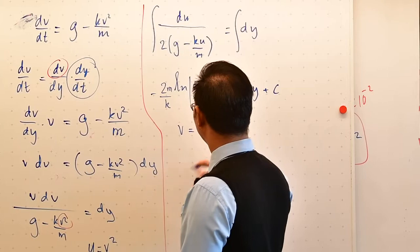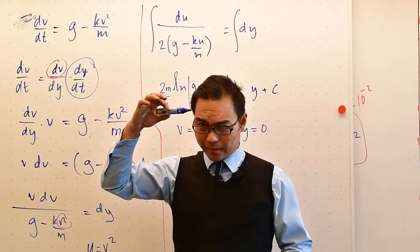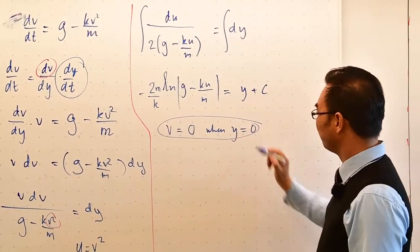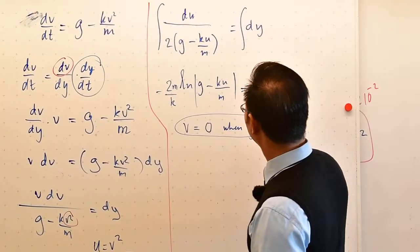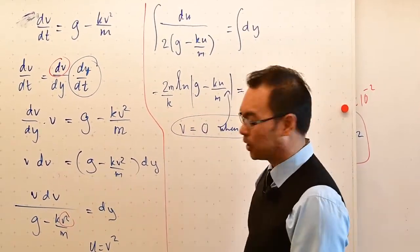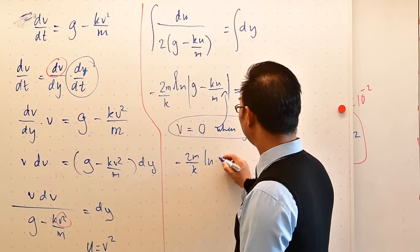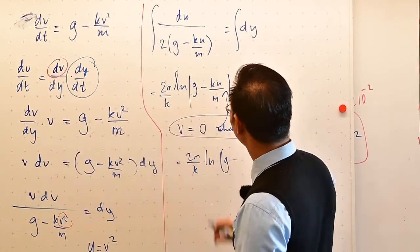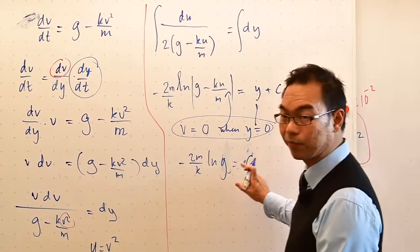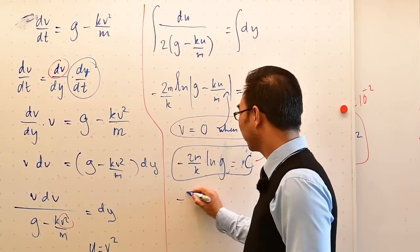A constant here can be determined. As you know that v is 0 when y is 0. The moment the skydiver leaves an airplane, it's still so that the velocity is 0. So you don't have any velocity when displacement is 0 or distance is 0. So putting this in over here. And remember that v and u are basically the same thing. C is going to be basically this. So I'm going to use this result right here in order to get to the next step. That would be minus 2m divided by k, log of g minus ku.